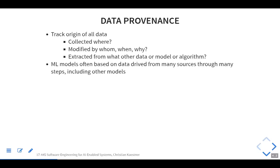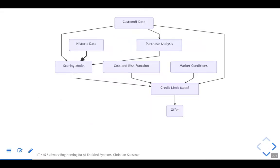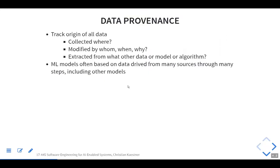Data provenance tracks the origin of all data: where was it collected, by whom, modified by whom, when, and why? If algorithms produced intermediate data, how was that produced — was it produced by another model? Going back to the credit card example, we may need to know what version of the credit scoring mechanism produced the input for our model. So we need to track what other model or algorithm produced certain data.